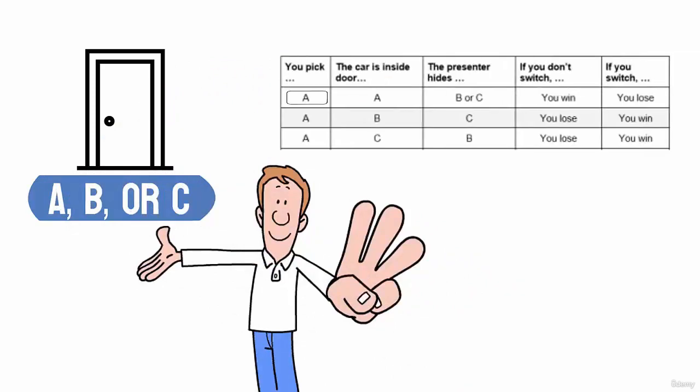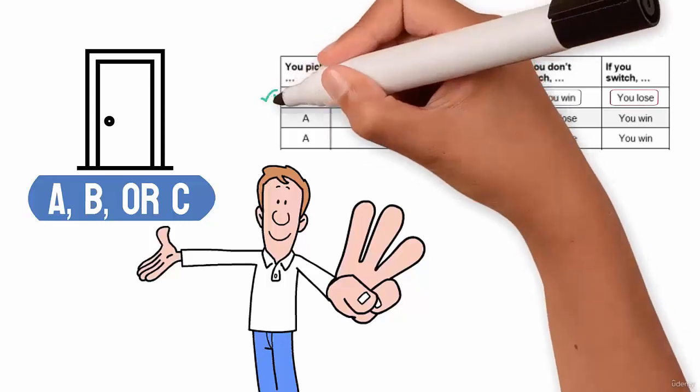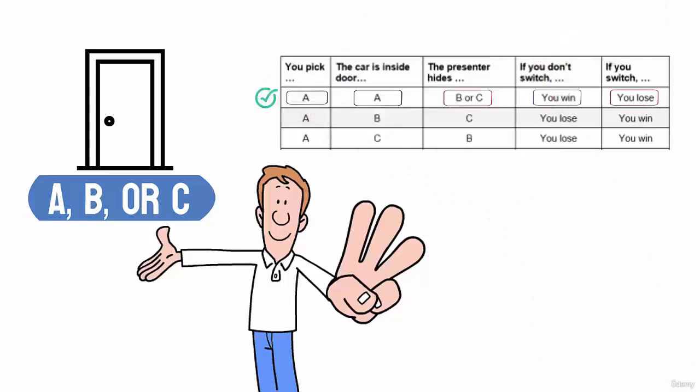The first scenario is that the prediction is correct and the car is inside door A. The presenter will hide doors B or C since they'll have the goats. And if you don't switch, you win. And if you switch, you lose. So we have one victory for door A.